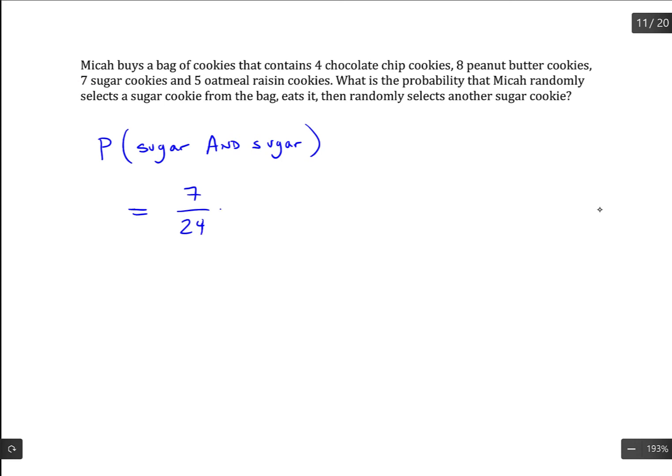Now if that is eaten, it's not being put back into the bag. So these are dependent events - the probability in the second one is going to be affected, and we have to make an adjustment.